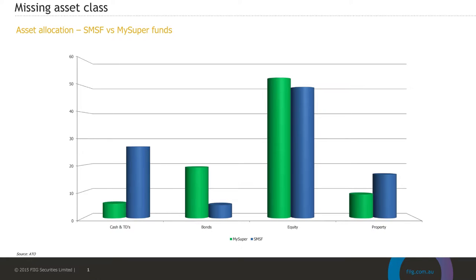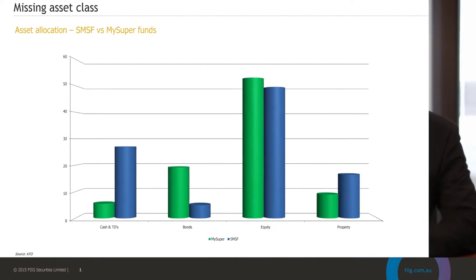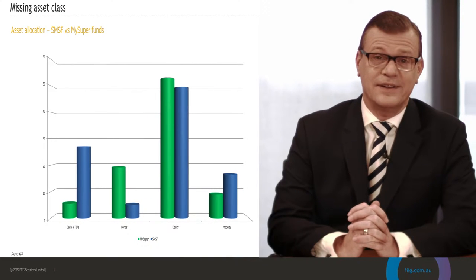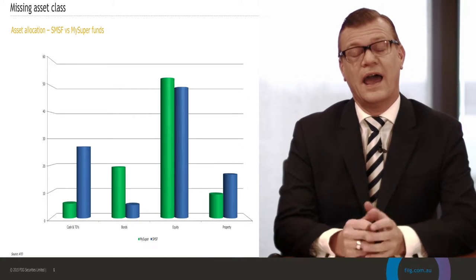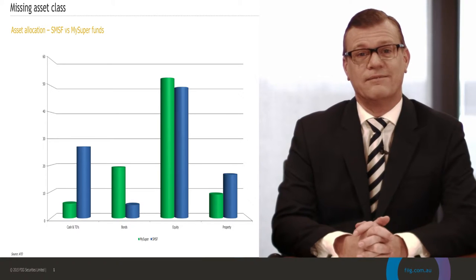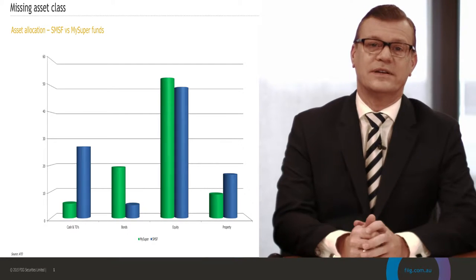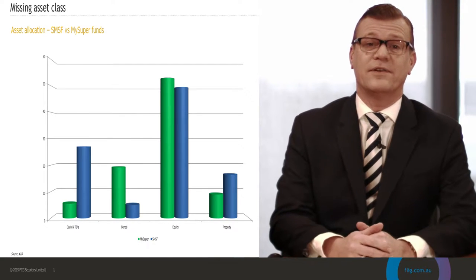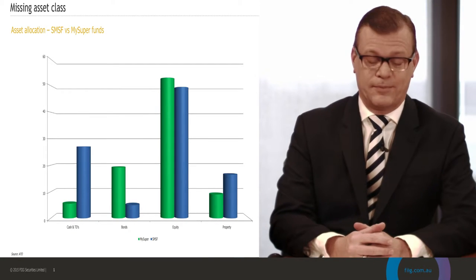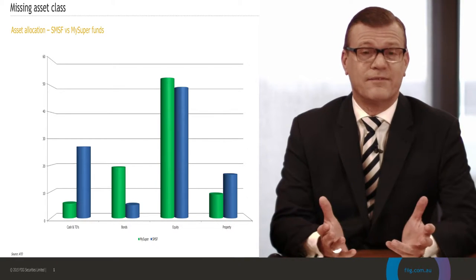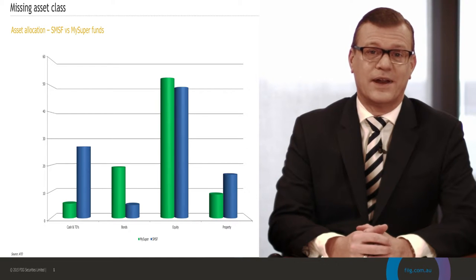I'd like to start by setting the scene. You can see here that we've charted the default fund allocation — the MySuperFunds — against SMSF allocation. Larger institutions that have access to the bond market have a greater allocation to bonds, whereas smaller SMSF investors are using cash and TDs as their fixed income allocation. That means they're missing out on the defensive behaviour that bonds can provide, placing SMSF investors at a real disadvantage.